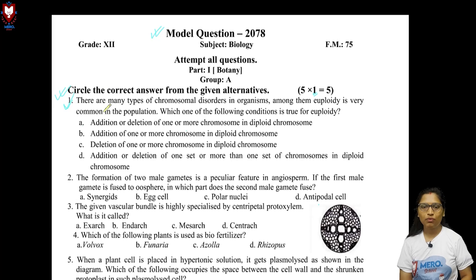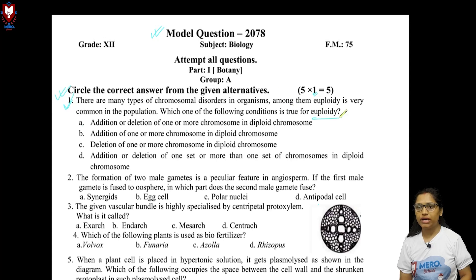In question number 1: there are many types of chromosomal disorders in organisms. Among them, euploidy is very common in the population. Which of the following conditions is true for euploidy?